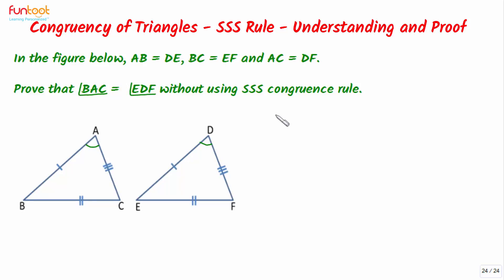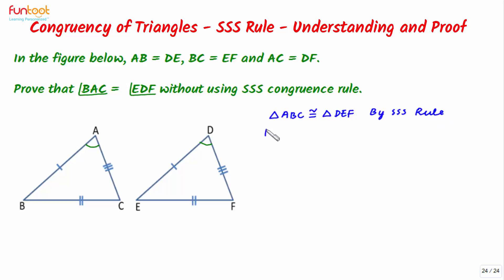Using the SSS congruency rule, proof of this is very simple: triangle ABC is congruent to triangle DEF by SSS rule, and by CPCT we can have angle BAC is equal to angle EDF. But here we have to prove this without using the SSS congruence rule.